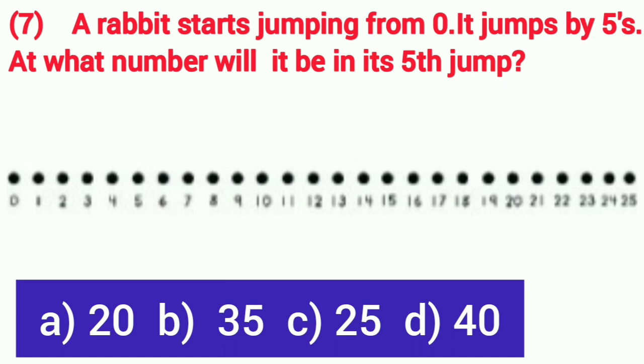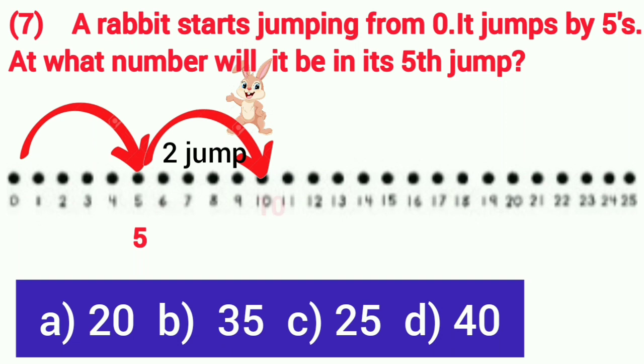A rabbit starts jumping from 0. It jumps by 5. At what number will it be on its 5th jump? Let's see dear children. A rabbit starts jumping from 0. It will take its first jump by 5 and will reach on 5. From 5, it will take its second jump and reach on 10.